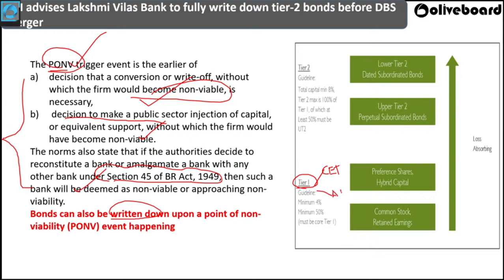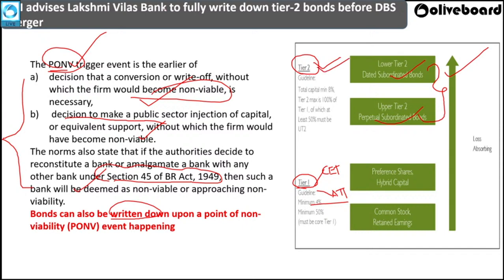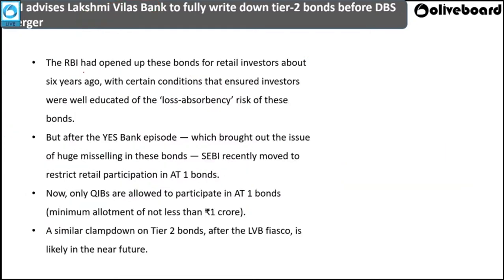There are different tiers of capital. Tier 1 includes CET1 capital and AT1 capital. Tier 2 capital includes subordinated bonds and perpetual subordinated bonds. Tier 2 is more loss-absorbing than Tier 1 but comparatively less risky. Despite being less risky, LVB has been advised to write down its Tier 2 bonds.